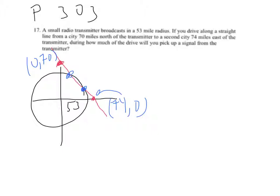I've got an equation of a circle that's centered at the origin with a radius of 53 miles, and then I've got another equation where the slope is -70/74 and it has a y-intercept of 70.